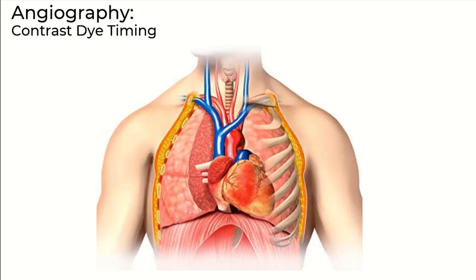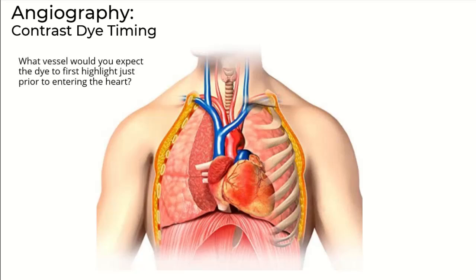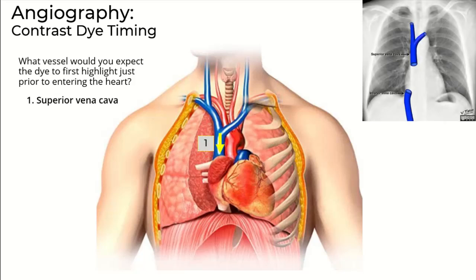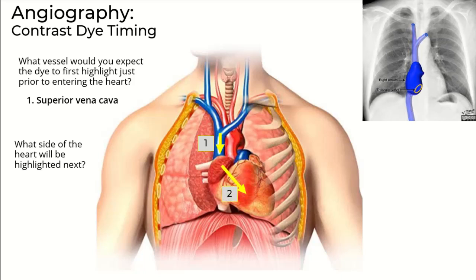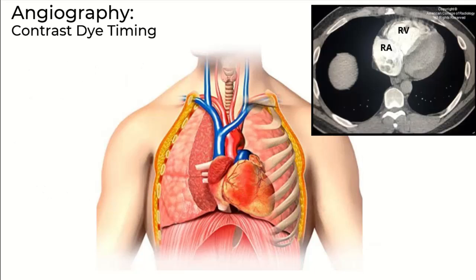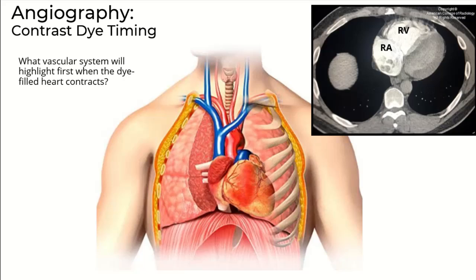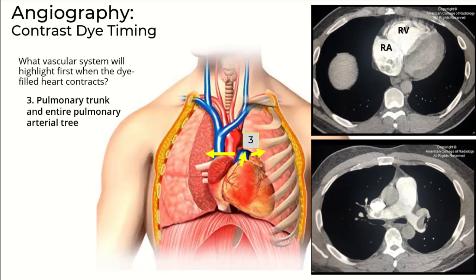Let's review the vascular pathway the dye would follow in sequential chronological order. What vessel would you expect the dye to first highlight just before it enters the heart? The superior vena cava. Now entering the heart, which side would highlight first? That would be the right side — first the right atrium, then the right ventricle. Here's a CT showing the right atrium and ventricle with dye, which is much brighter than the left side of the heart. When the heart contracts, what vascular system will receive the dye? That would be the pulmonary vascular system. On the CT slice taken just superior to the heart, we see the contrast-highlighted pulmonary trunk and right and left pulmonary arteries.